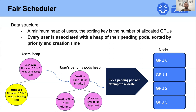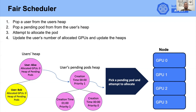The way we allocate pods is this: first we pop the first user from the user heap, then we pop the first pod of this user and allocate that pod. In the following example, Alice is the first user in the user heap, so we allocate her first pod and update the number of allocated GPUs she currently uses. Once we do that, the heap is updated and Bob will move to the top of the heap.